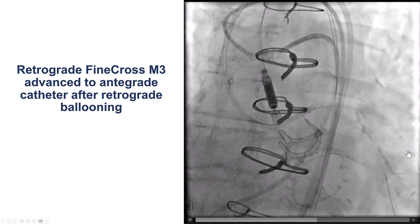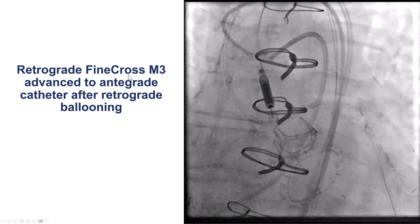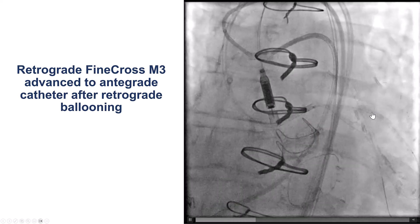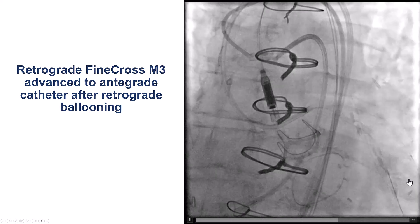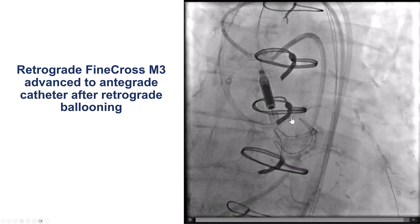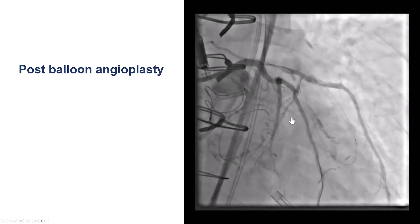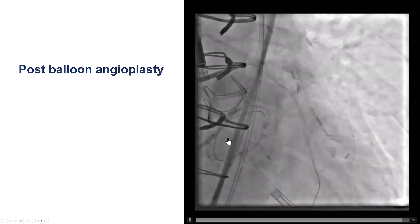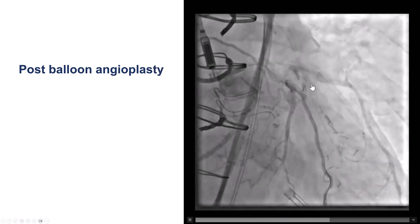At this point, we were able to change the retrograde microcatheter to the FineCross M3, which has been shown to be very crossable compared with other microcatheters. This microcatheter successfully advanced inside the antegrade guide catheter. So we externalized the wire and performed balloon angioplasty. There is some antegrade flow going through.